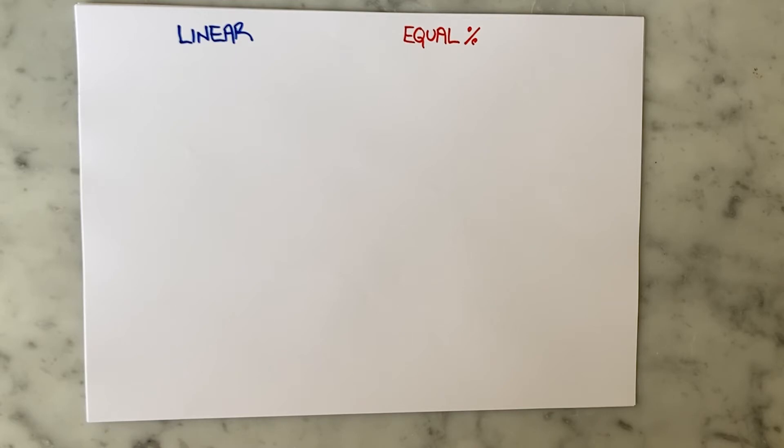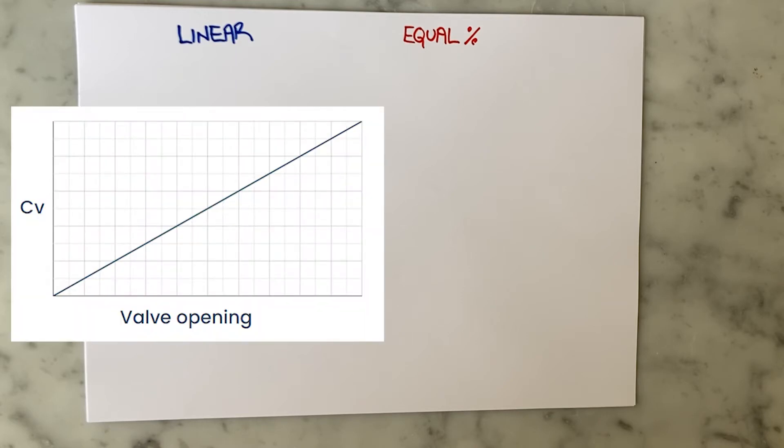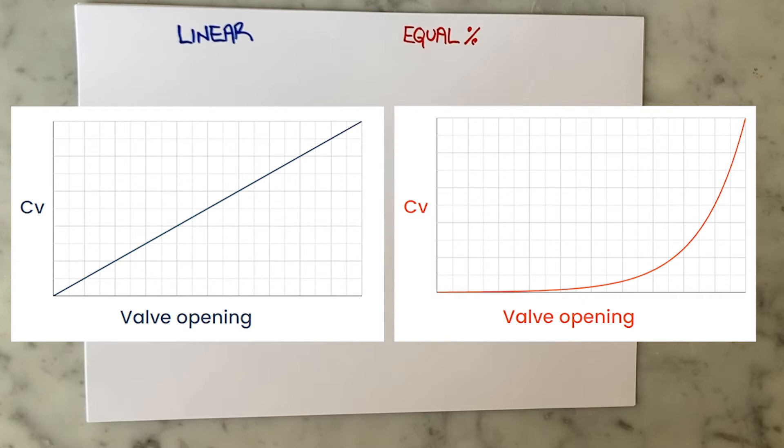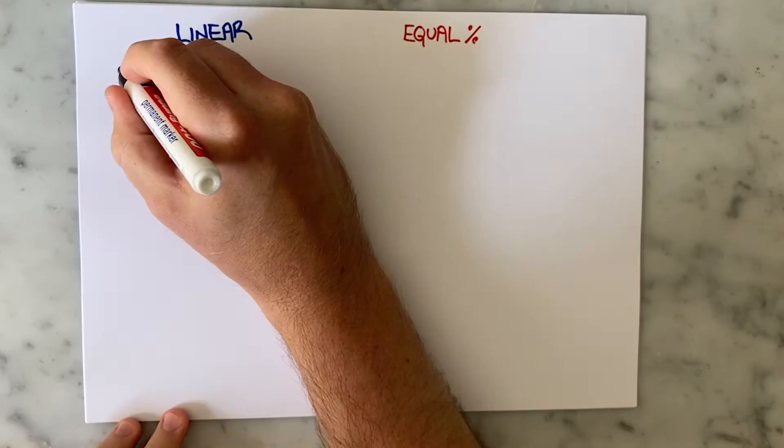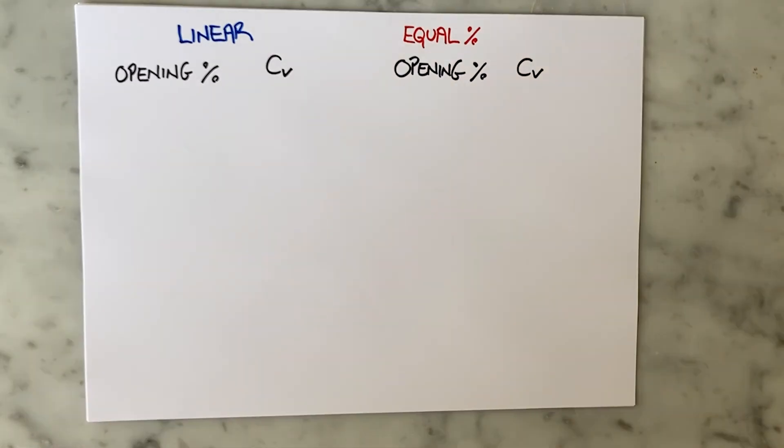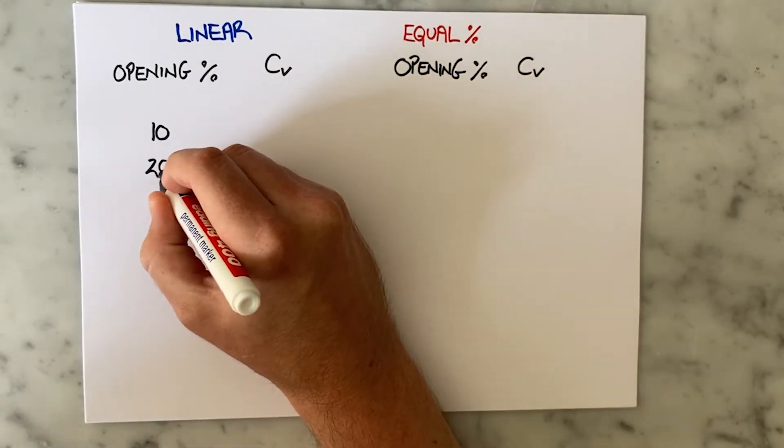One has a linear characteristic and one has an equal percentage characteristic. We will look at the valve opening percentage and we will look at the CV. Assume that both of them have a CV of 5 when they are open at 10%.